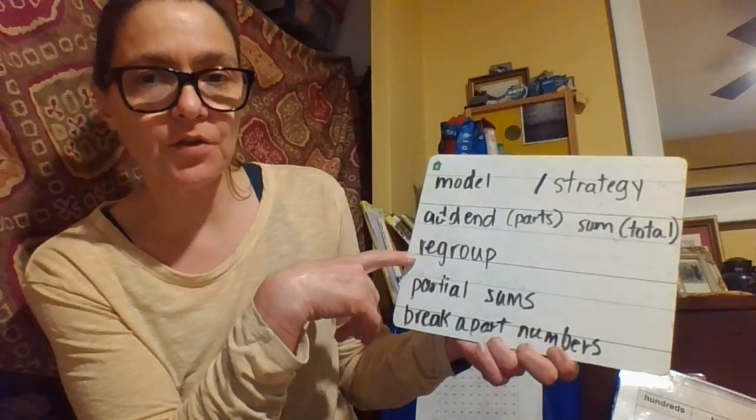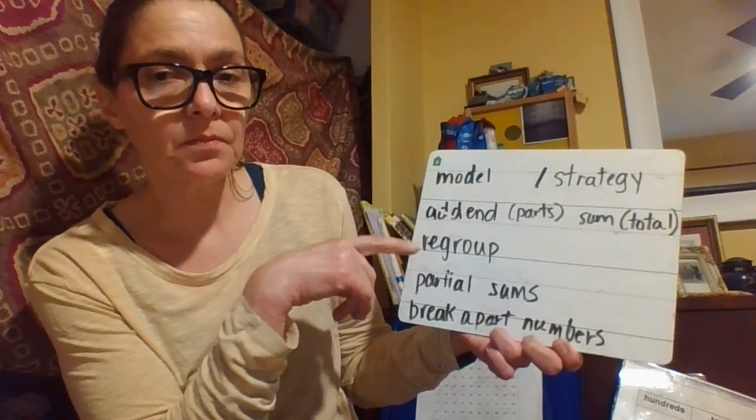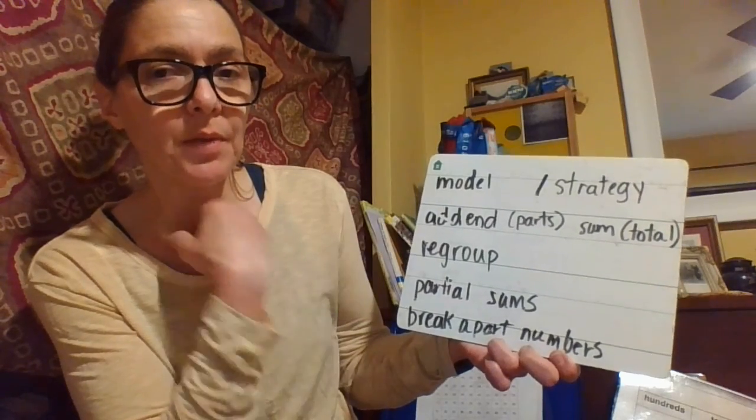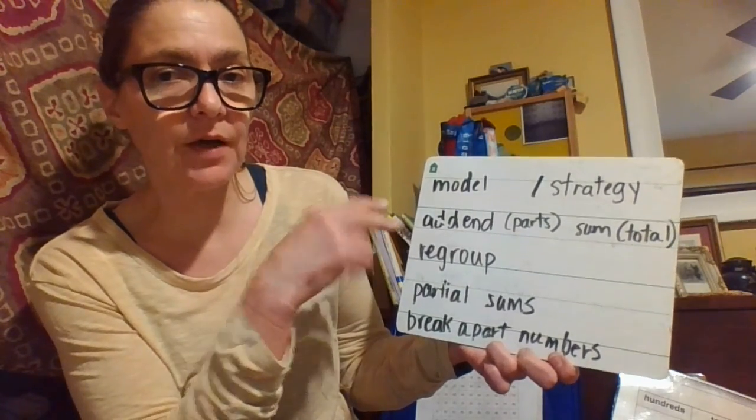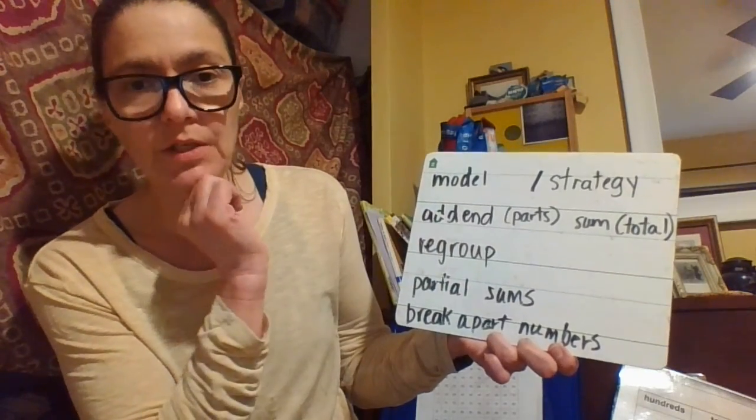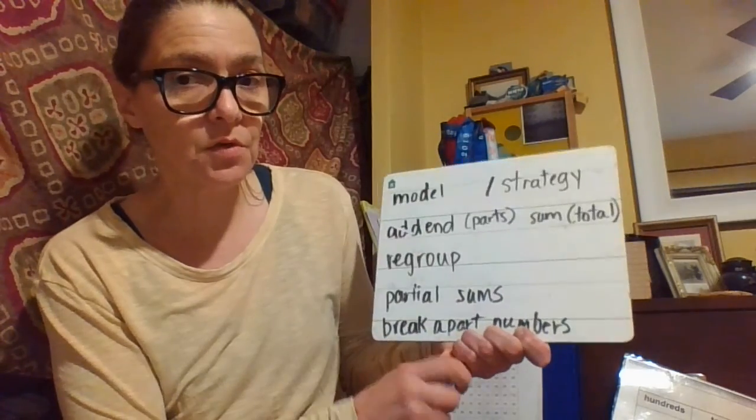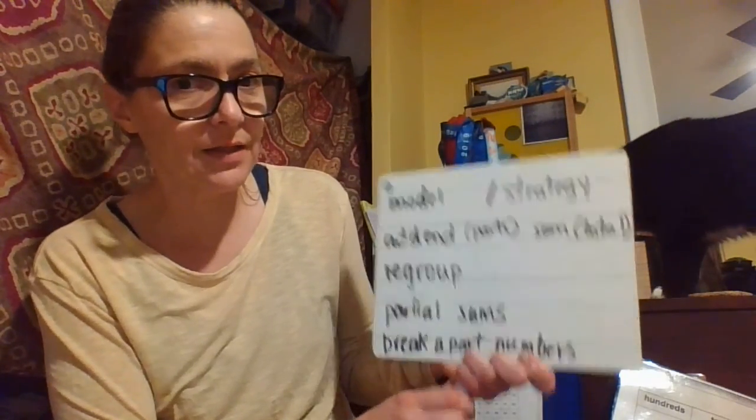In this lesson you'll also be doing some regrouping, and that's when you make a bundle and you move it to the next place value in addition. They also mention addends - the addends are the parts of the equation. The two addends are what you are adding together.